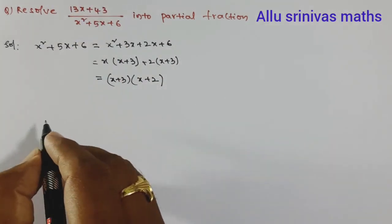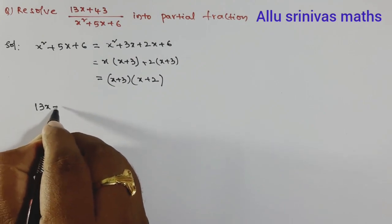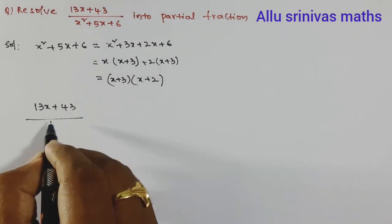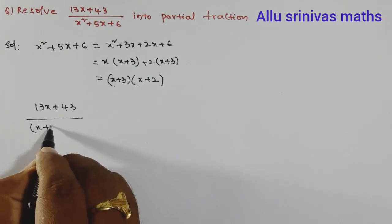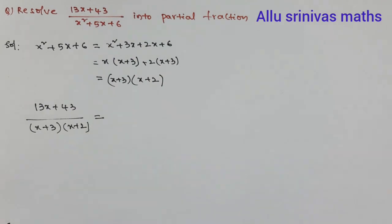This rational fraction can be written as (13x+43) divided by (x+3)(x+2). It is also a proper fraction. Now we can find the partial fractions. Both factors are linear factors, so as per the rule we register partial fractions of the corresponding form.